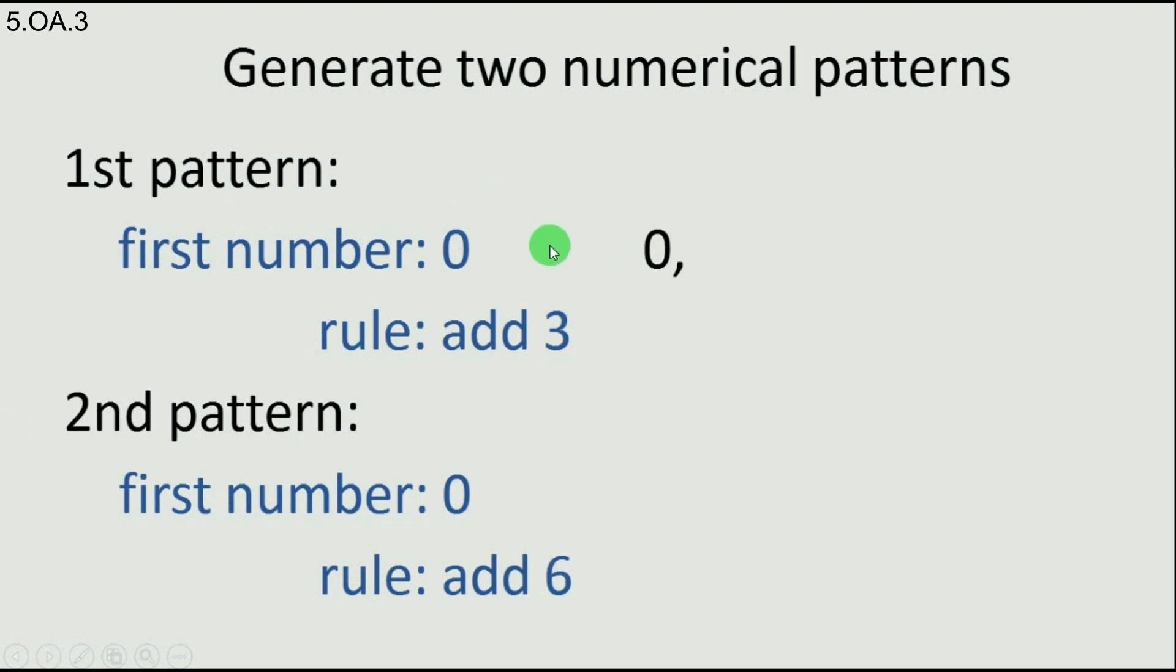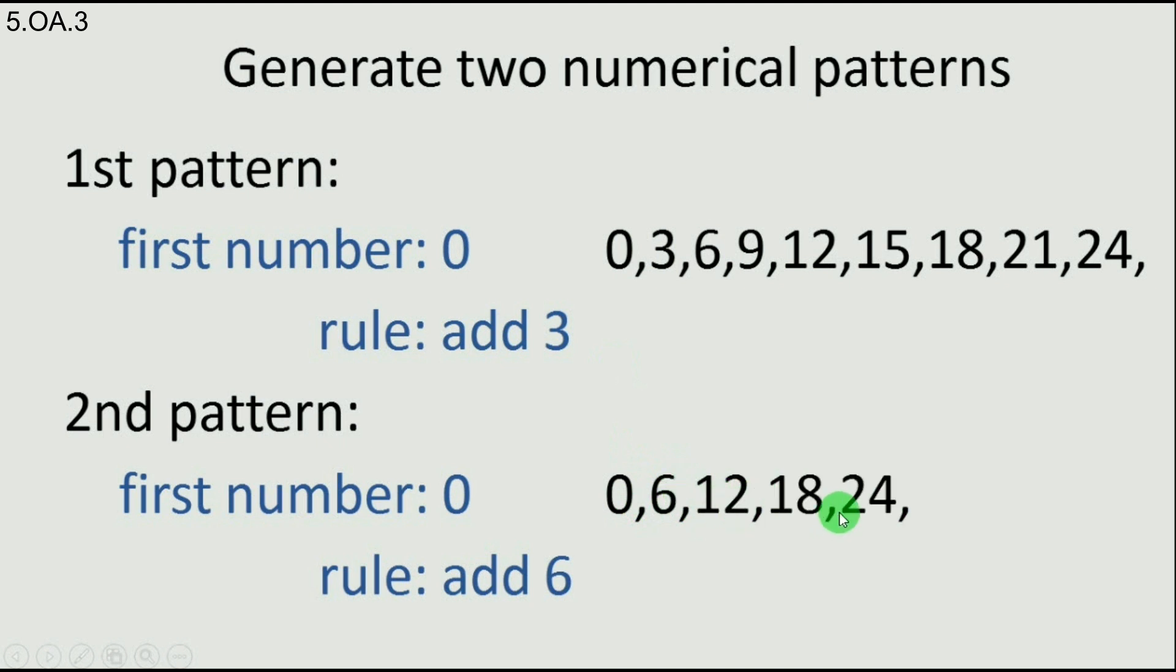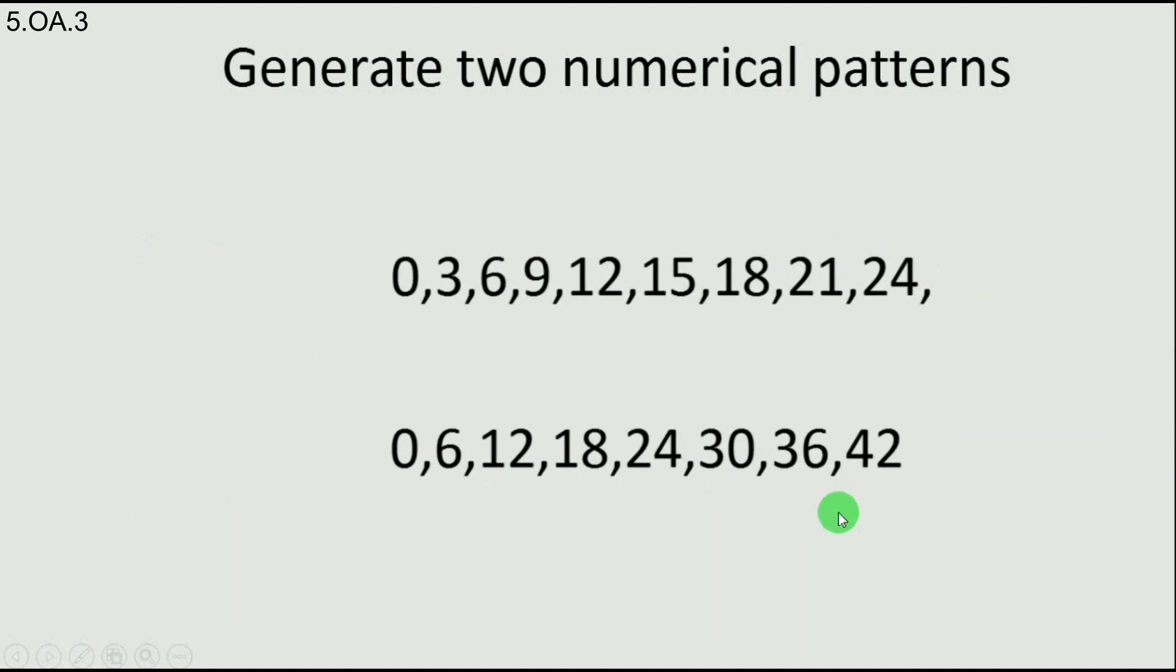We'll start to build the first pattern. We'll start from zero, then add three, add three again, and so on. The second pattern we start from zero and add six this time. Then add six again to get twelve, and always add six to the last number to find the next number. We have then two patterns.